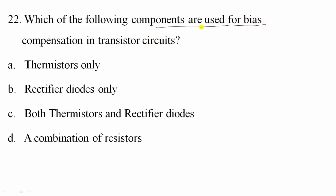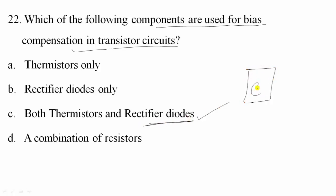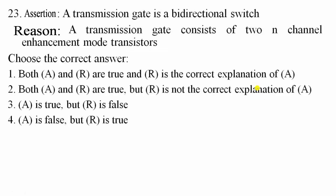Question 22: Which components are used for bias stabilization in transistor circuits? We use thermistors and also rectifier diodes for bias configuration. Option C is correct.